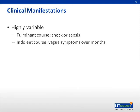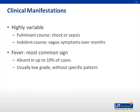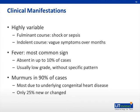The clinical presentation of endocarditis is highly variable. It can range from a fulminant course where patients present in shock or sepsis, to an indolent course with only vague constitutional symptoms over months. The most common sign is fever; however, fever can be absent in up to 10% of cases. When present, it is typically low-grade and without a specific pattern. Murmurs have been documented in 90% of cases; however, most are due to underlying congenital heart disease, and only 25% have been documented as new or changed.